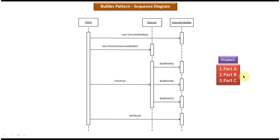In the right side you can see product. Suppose if you want to create this product which is a complex object, then what you have to do is you have to first build the part A, then part B, then part C.